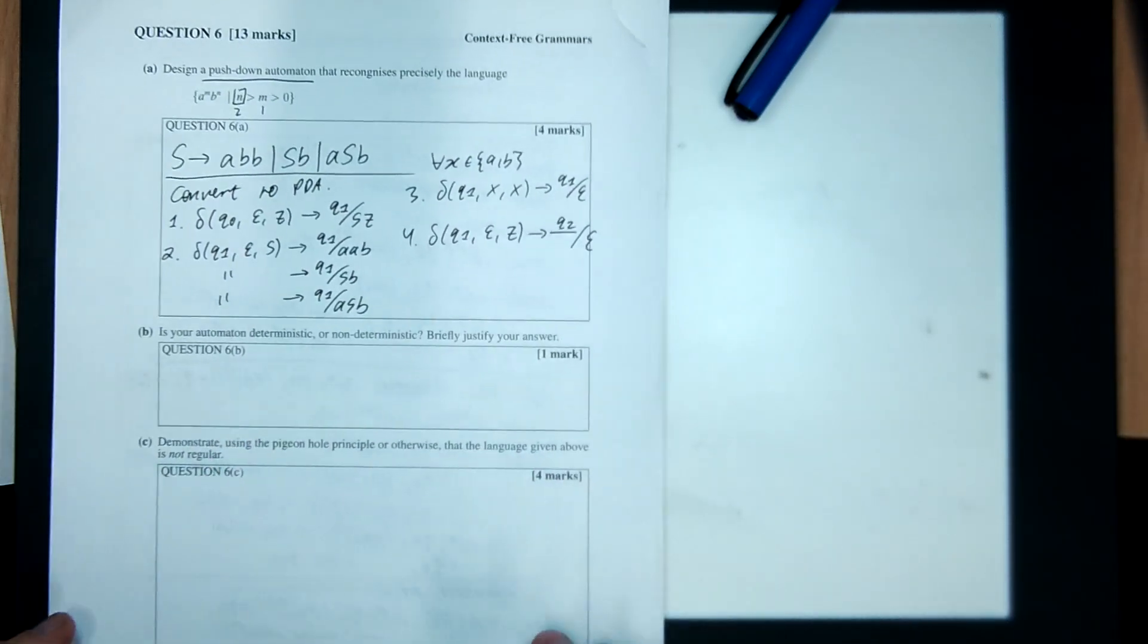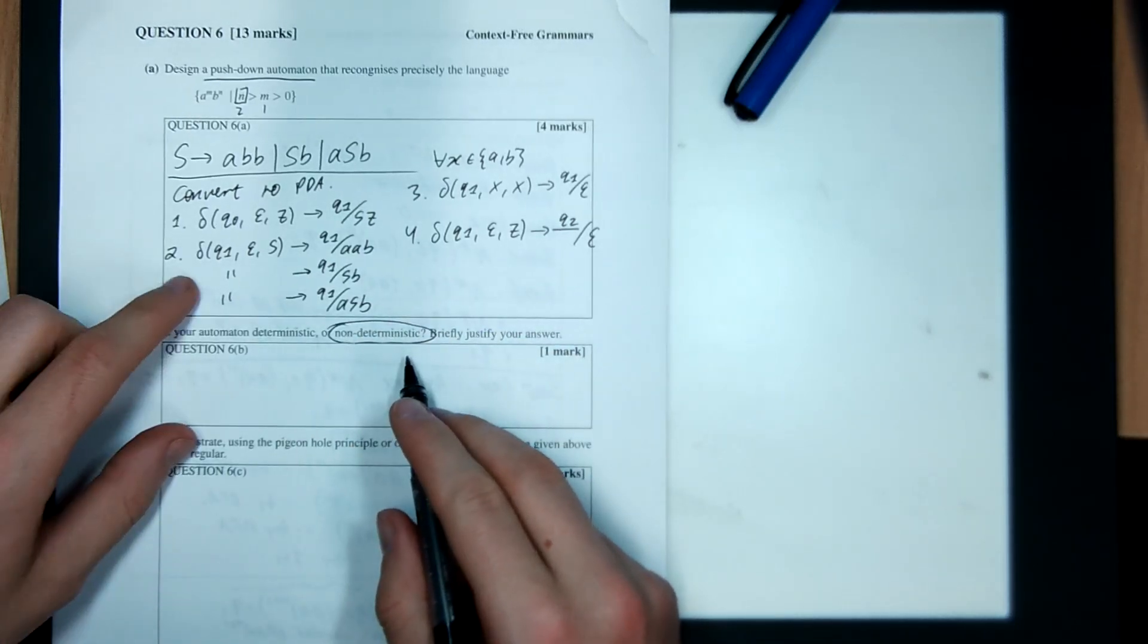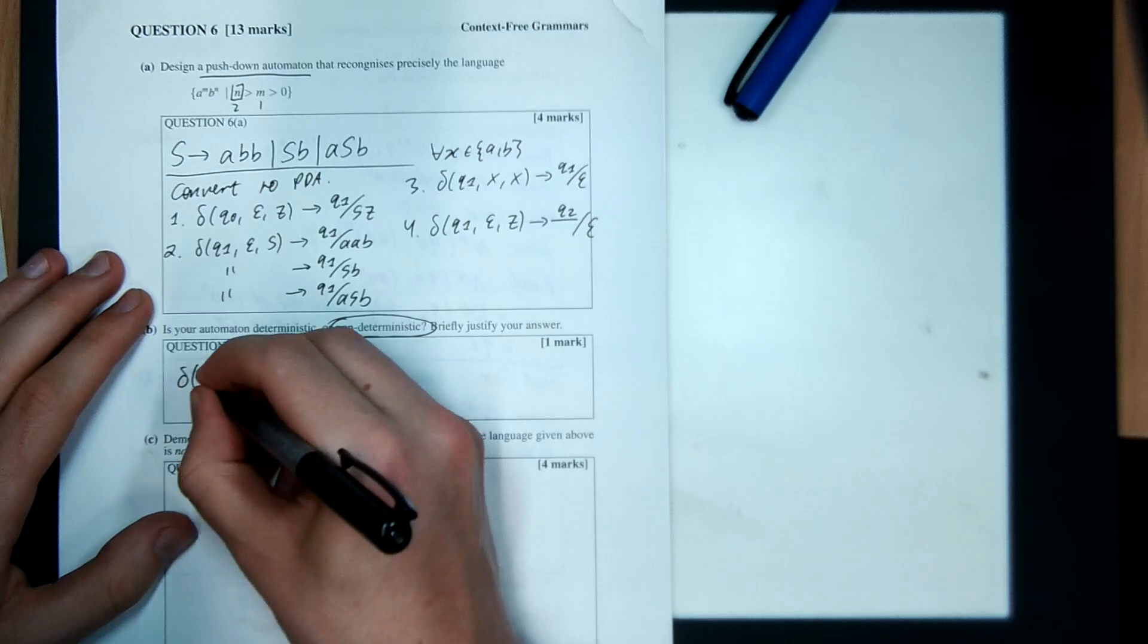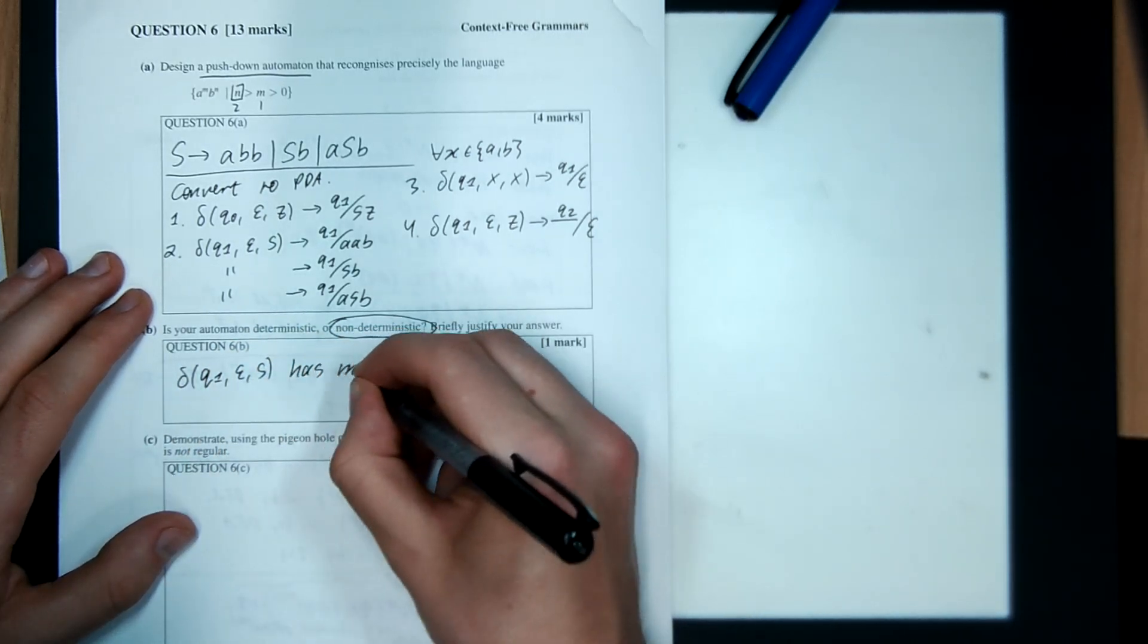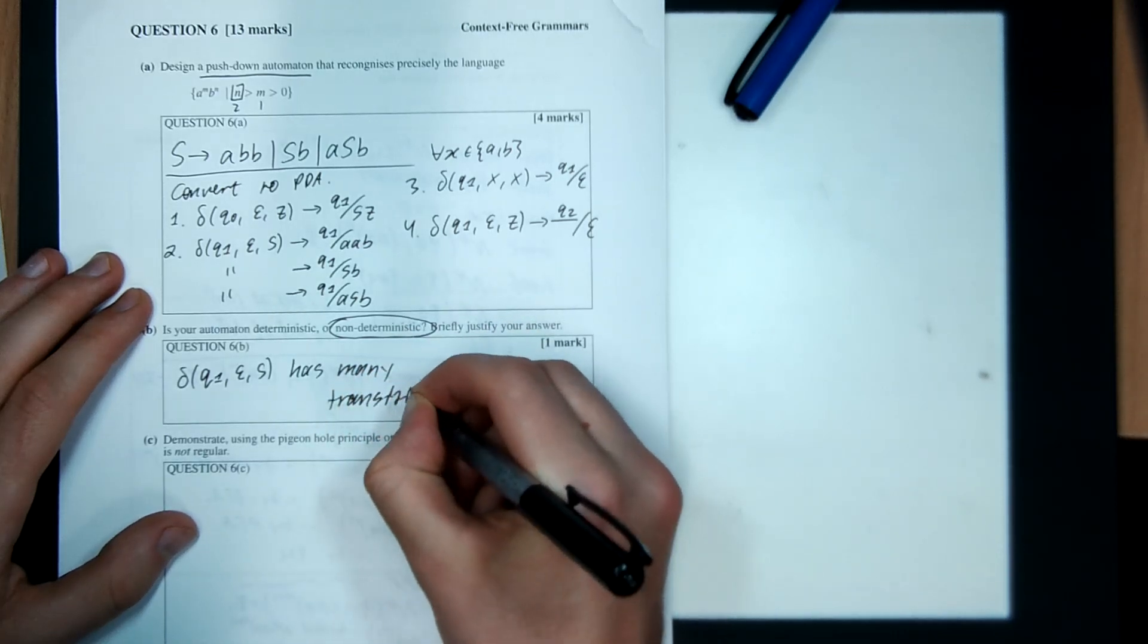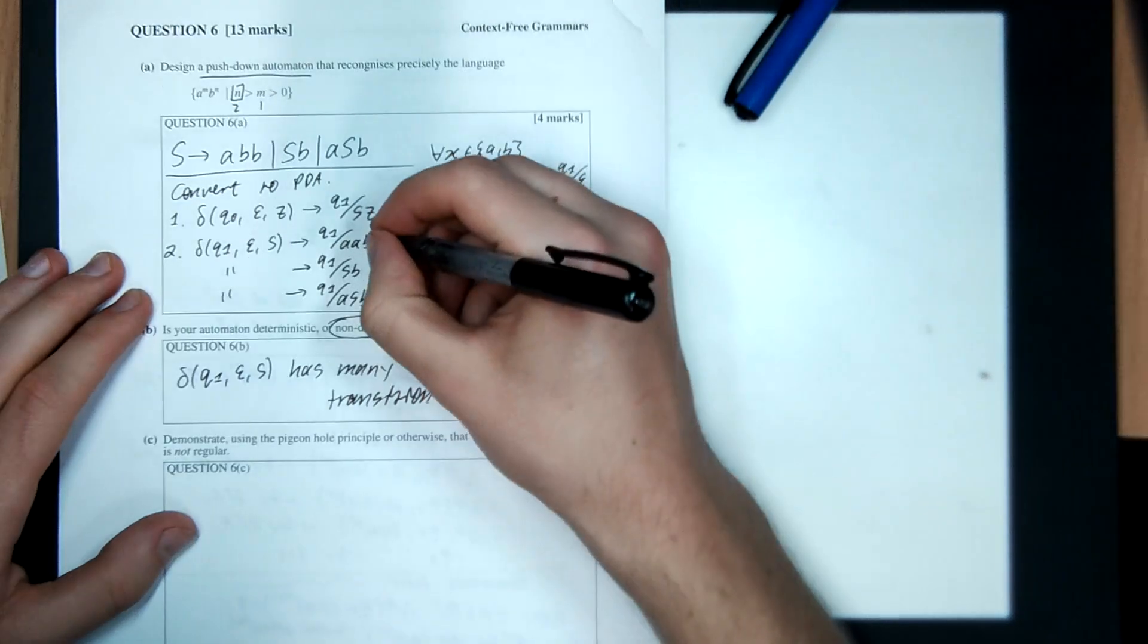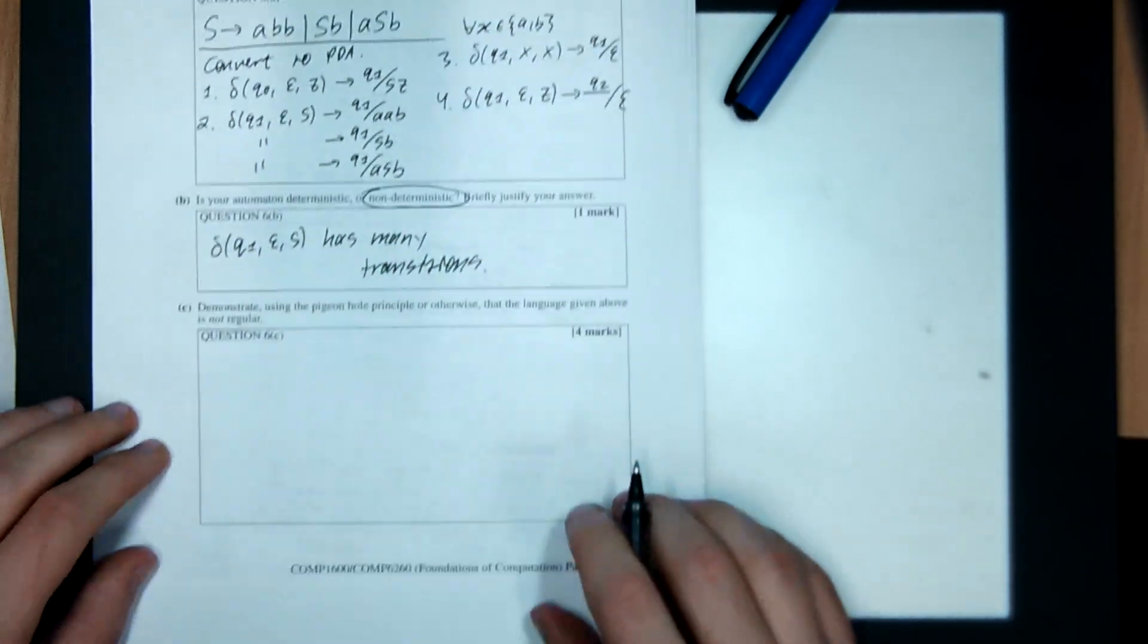Is your automaton deterministic or non-deterministic? It's non-deterministic. Why? Because delta Q1 epsilon S has many transitions. Because I could do this, or I could do this, or I could do that. It makes it, that's pretty non-deterministic.